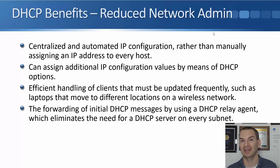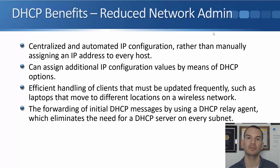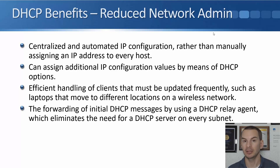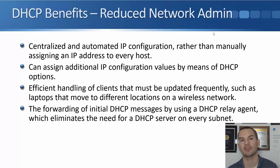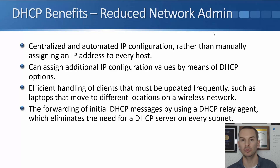It's much easier than manually assigning an IP address to all your individual hosts. You can also add additional IP configuration values by using DHCP options. For example, if you're using IP phones in your office, they need to learn where their TFTP server is — you can give them that information using DHCP. It also gives efficient handling of clients that move frequently, such as laptops on a wireless network. Different physical areas of the campus will have different IP subnets and VLANs, so by using DHCP, the laptop will automatically be updated with the correct IP address.